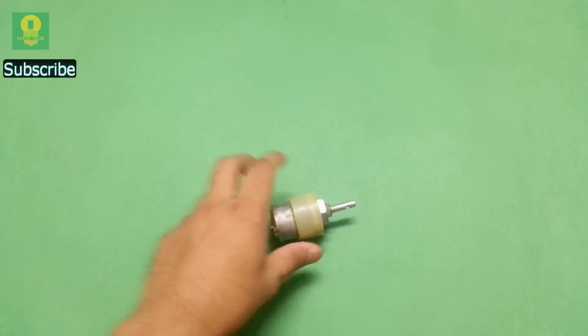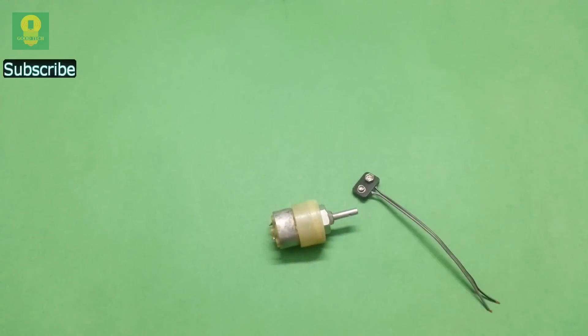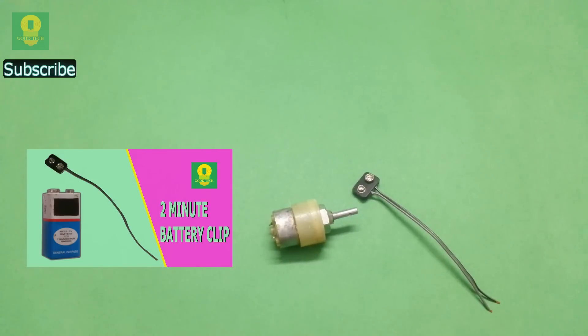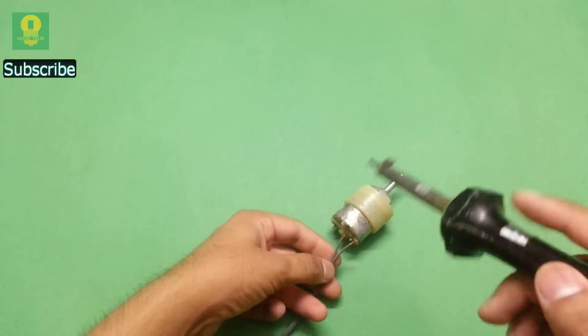Take a gear DC motor and battery connector clip. You can also watch the video to make a battery connector at home. Solder the connector wires to the motor terminals.